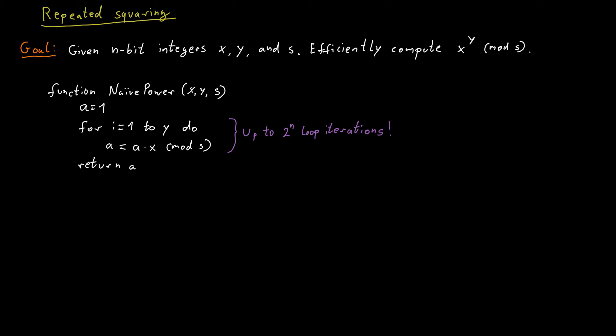So here is a recursive procedure for this. We call it the power function. And first of all, we observe that if y in the exponent is equal to 0, then we know what the result is. It's just 1. So if you take x to the power 0, that is just 1.